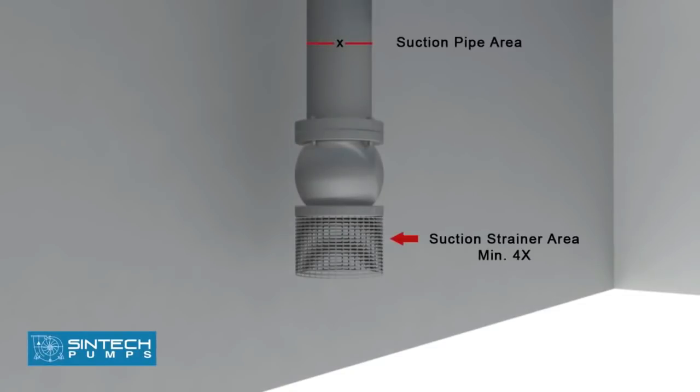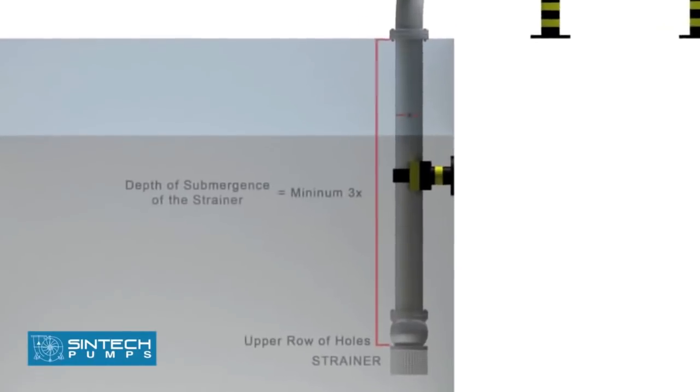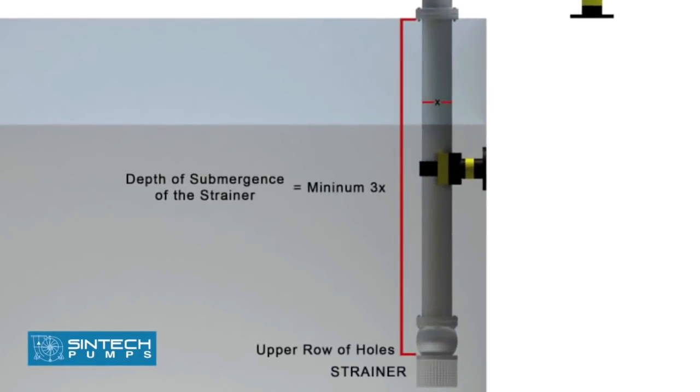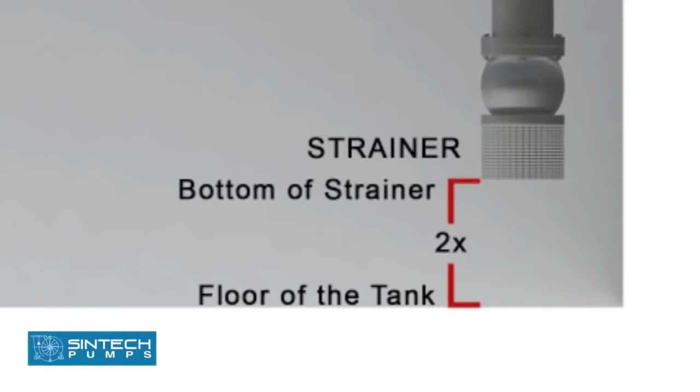The suction strainer must be at least four times the suction pipe area, and the mesh size should screen out solid particles that would clog the impeller. The minimum depth of submergence of the strainer should be at least three times the pipe diameter, measured from upper row of holes of strainer. The distance between the bottom of strainer and the floor of the tank should be considered as two times the pipe diameter.